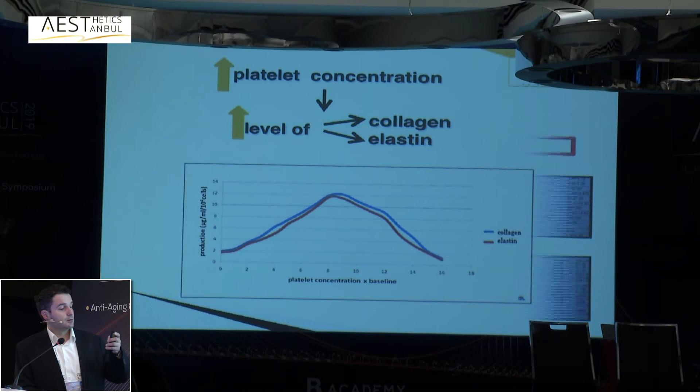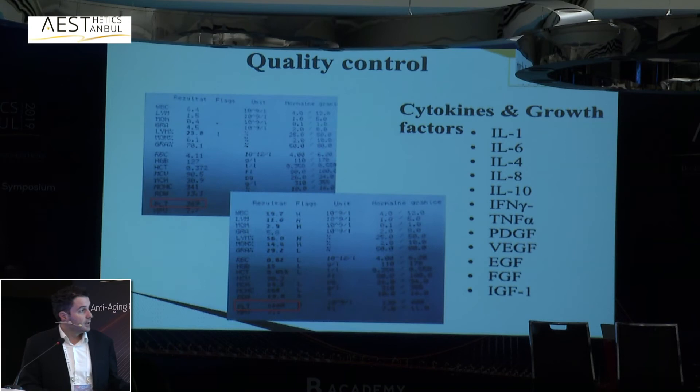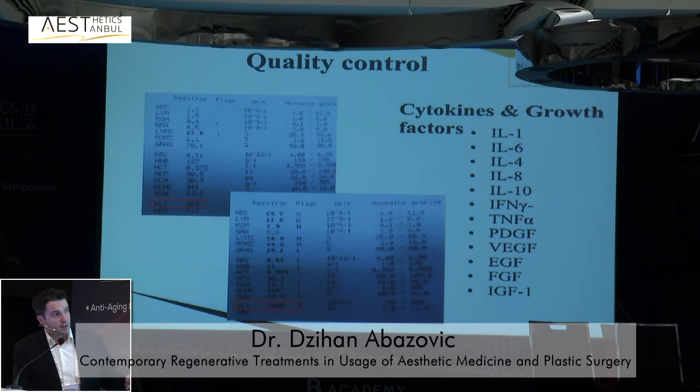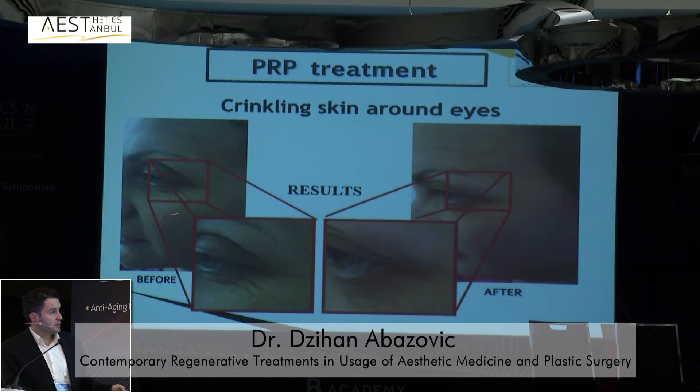In our clinic we do strict quality control. We go above the target concentration and then dilute it with platelet-poor plasma. We can achieve around 10 times concentration. For clinical studies, we record all parameters from both the patient's blood and the substrate we are applying.